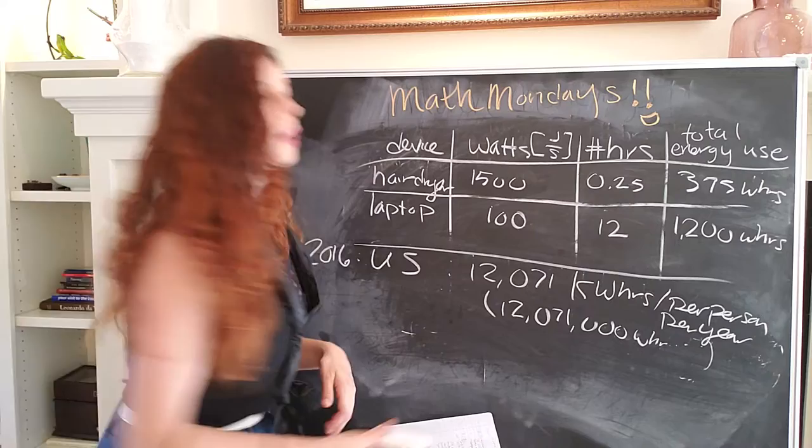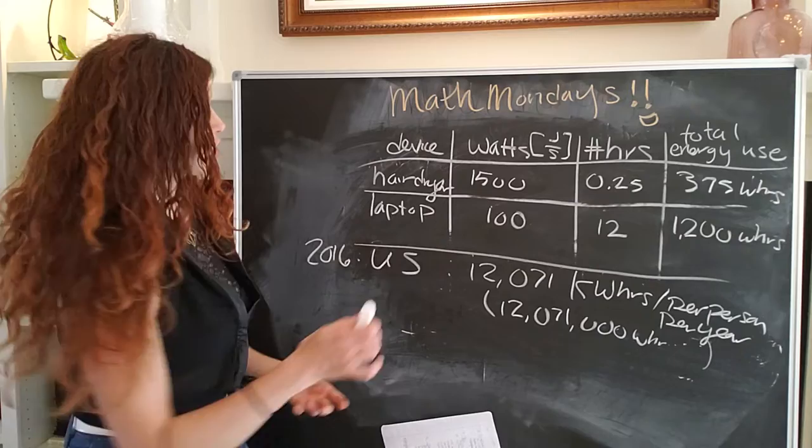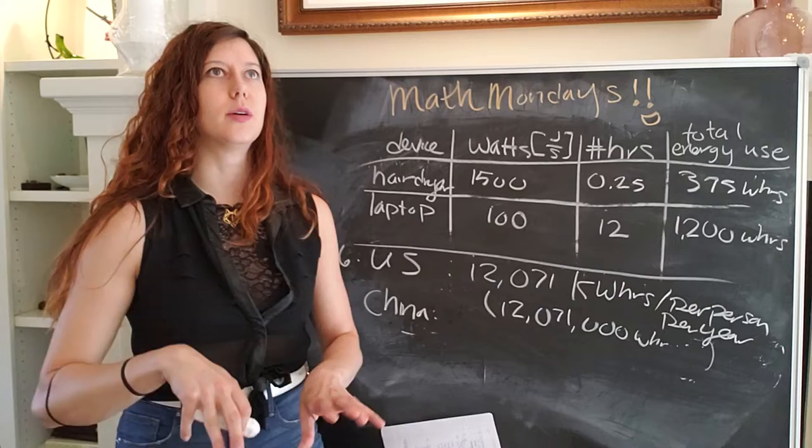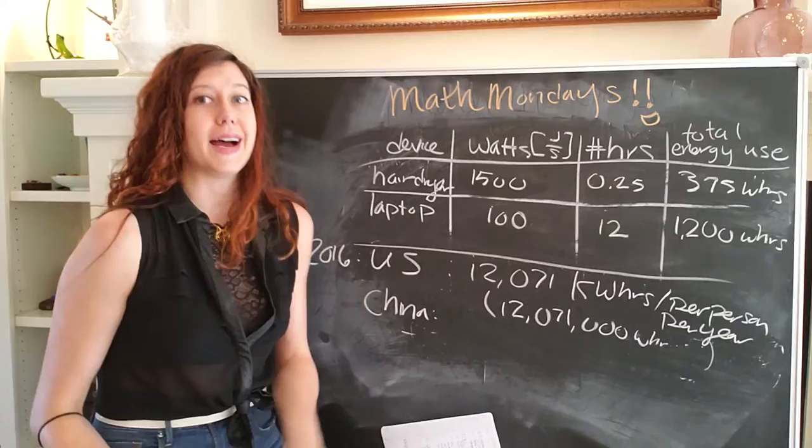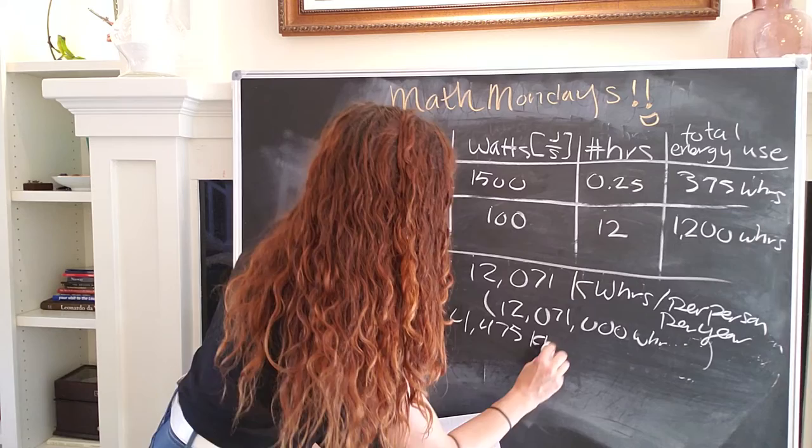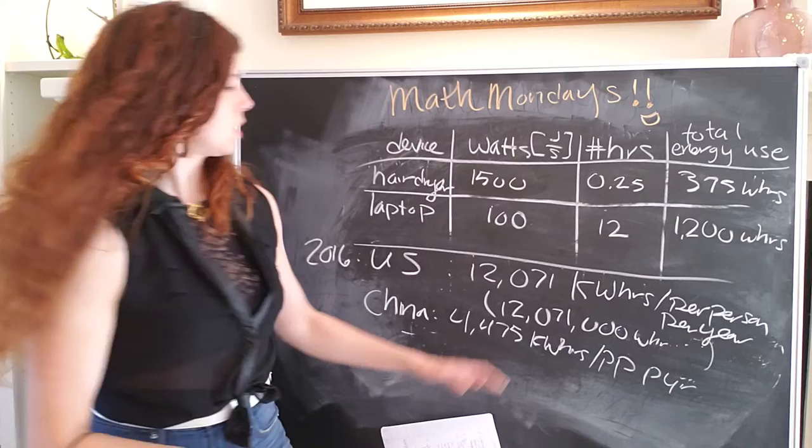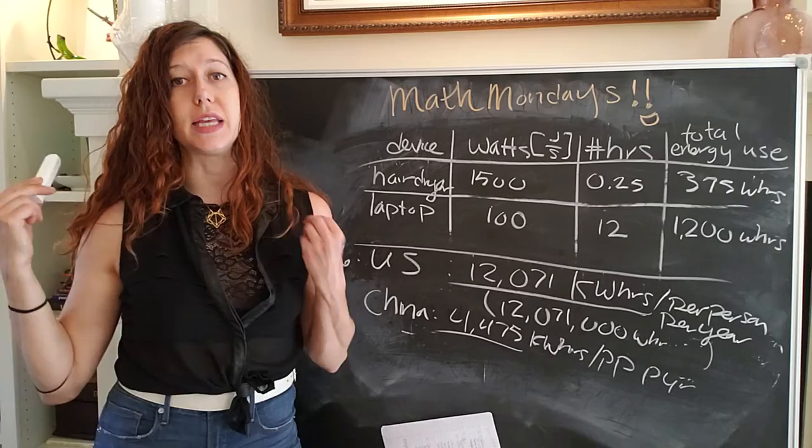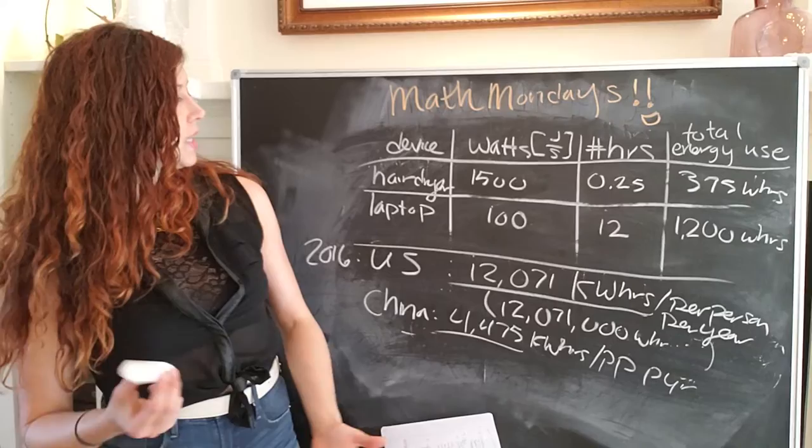How much is it in relation to other countries? Well, China, which consumes the most electrical energy of any country, actually consumes less per person. So it's about 4,475 kilowatt hours per person per year. So that's really interesting because that means that the average citizen in the United States consumes about three times as much as the average person in China.